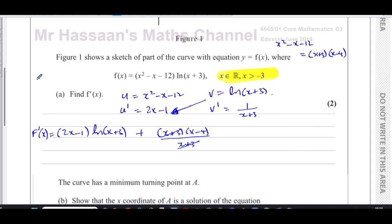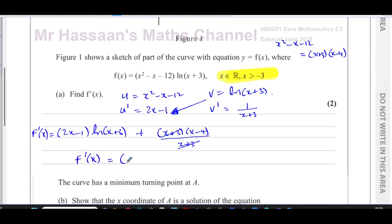This is f'(x) — the same as dy/dx, just using the notation they used in the question. Note: f'(x) does not mean inverse; inverse is written as f⁻¹(x) with a minus one power — they are not the same, so don't get confused. Therefore f'(x) = (2x - 1)·ln(x + 3) + (x - 4). That is the answer to part (a).